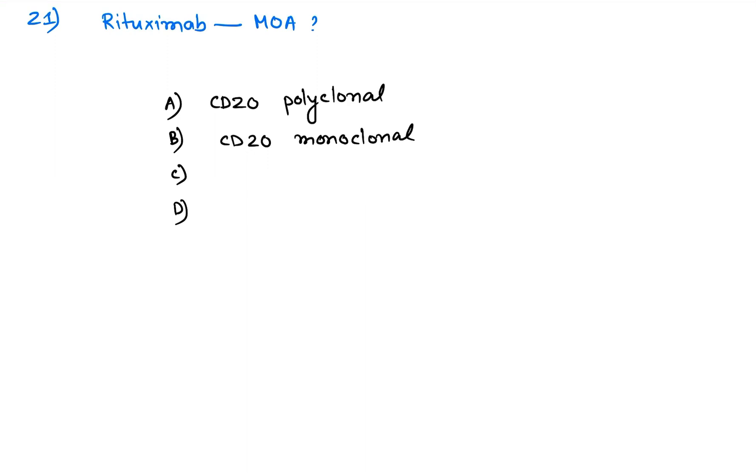Starting with third video of INICT recall questions. What is the mechanism of action of rituximab? It is a monoclonal antibody that binds with B cells with CD24 antibody. So the answer is CD20 monoclonal mechanism of action of rituximab.